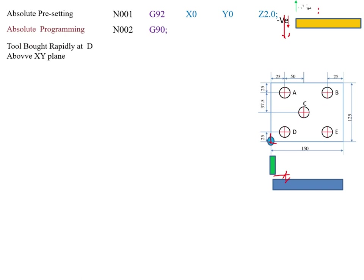Next, the tool has to move rapidly from the 0,0 position to the D position. The D position is X25 and Y25. The tool has to be moved rapidly at D, above the XY plane. The initial Z is already set to 2 mm above the workpiece surface. The motion code for rapid positioning is G00. So my next block is N003, G00, X25, Y25 — this is the D hole location.